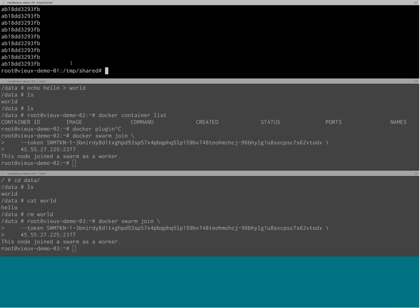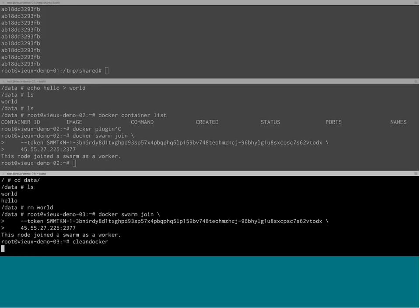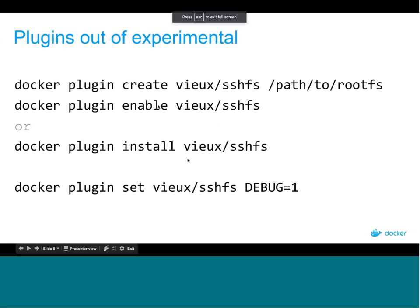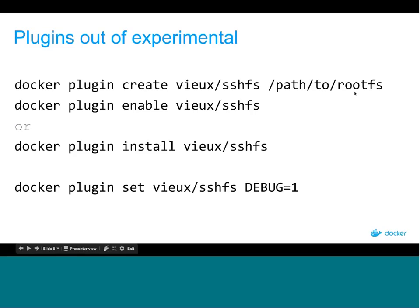Let me clean up and continue. And to create a plugin, we have a 'docker plugin create' command. It's not using Dockerfiles — it's a bit more complex than creating Docker images, mainly because creating plugins is mostly for vendors and specialized users. You do 'docker plugin create' with the name you want and the path to the rootfs and configuration. Then you can 'docker plugin push' it.